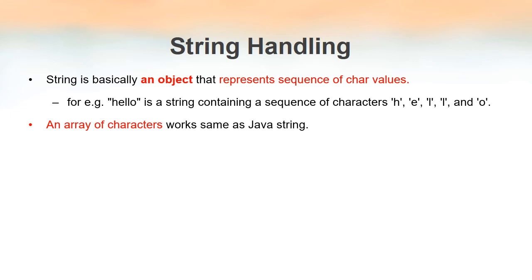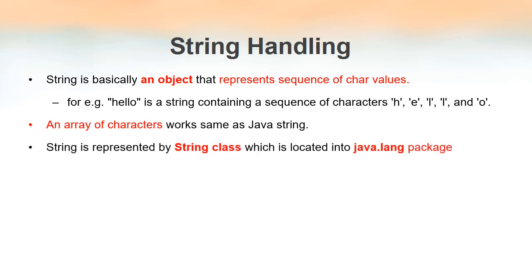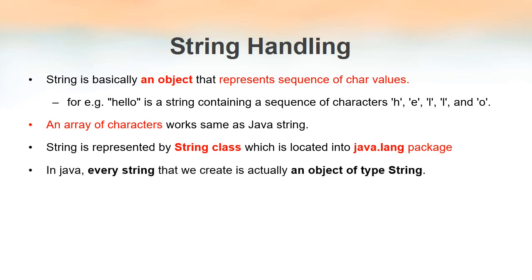An array of characters also behaves as a string in Java — we can convert a character array into a string. String is actually represented by a class in Java named 'String', so string is not considered a data type in Java; it is actually a class. The String class is located inside the package java.lang, and every string we create in Java is an object of this class.